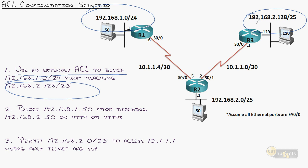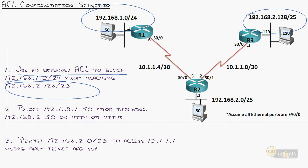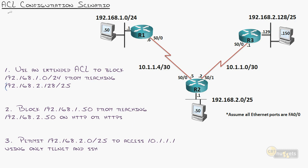Anytime you have a source and a destination, or port number, or anything like that, extended access lists is the way to go. As a refresher, extended access lists can filter based on source and destination IP. They can filter based on protocol — things such as TCP, UDP, ICMP, et cetera. Those are the ones we care about in CCNA. And then port number — for instance, TCP port 80, TCP port 25, all that kind of stuff.